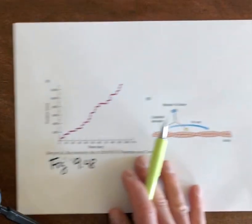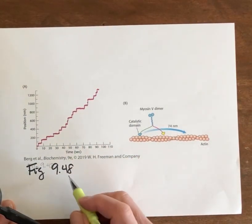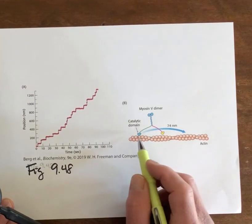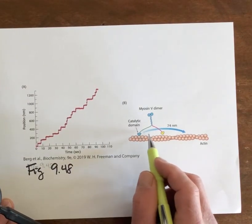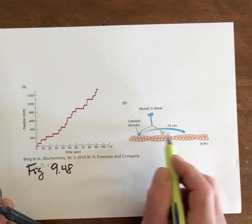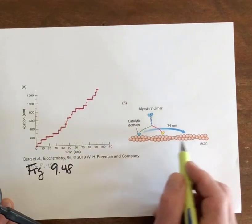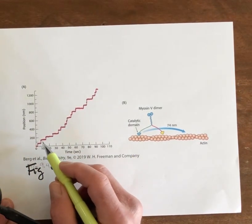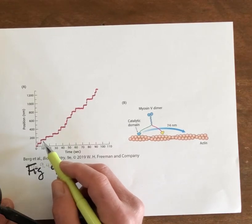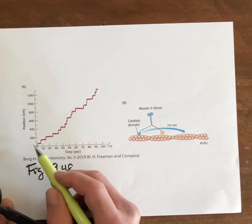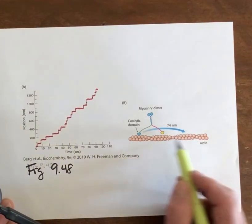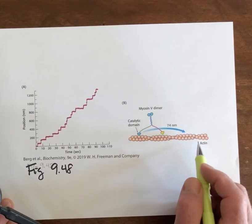The next figure is taken from chapter 9, figure 9.48. Here the figure is illustrating the concept of myosin walking in strides along filaments of actin. Scientists have figured out ways to observe this for single molecules of myosin. You can see that the position of the myosin molecule is moving in unit increments as a function of time, as a consequence of these walking movements.